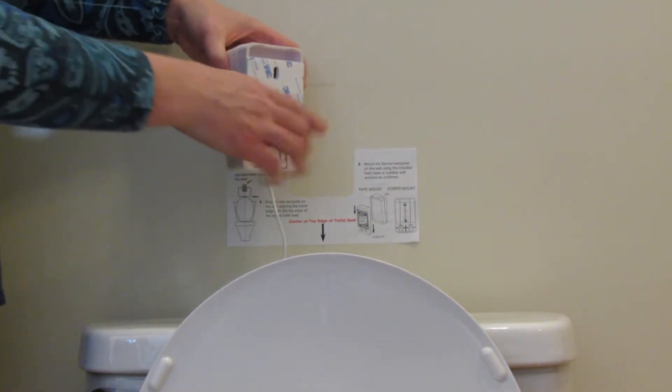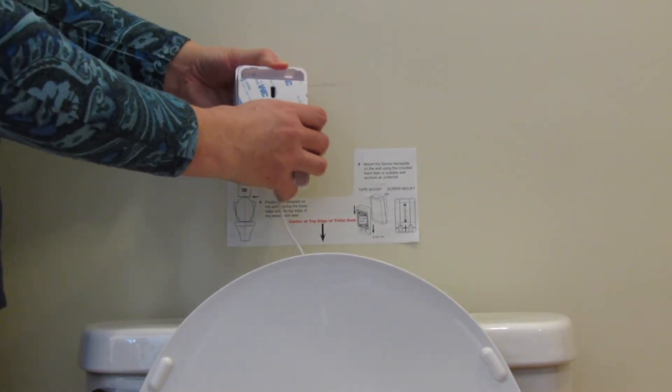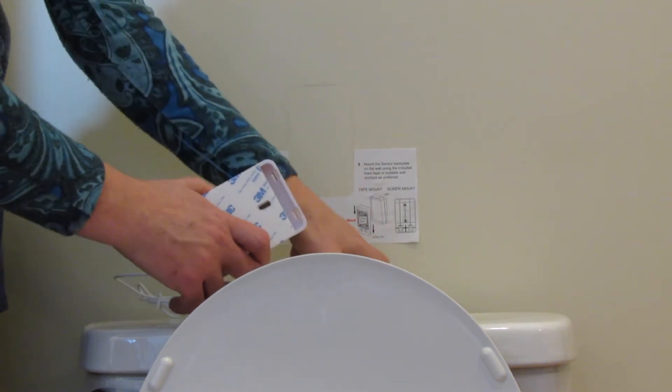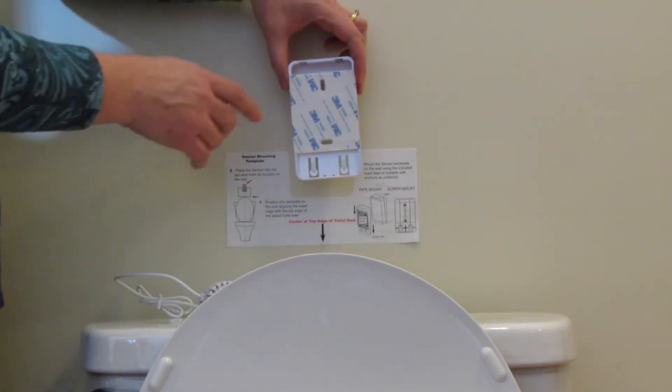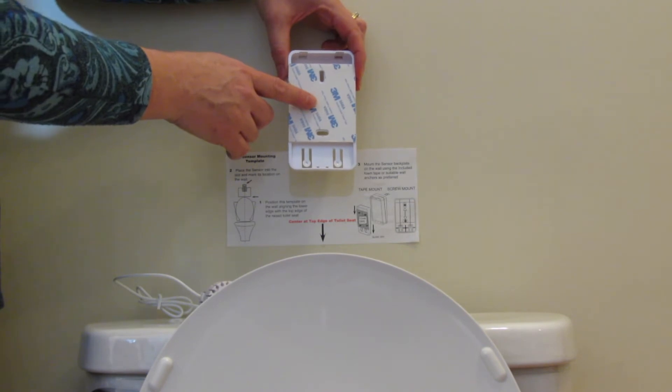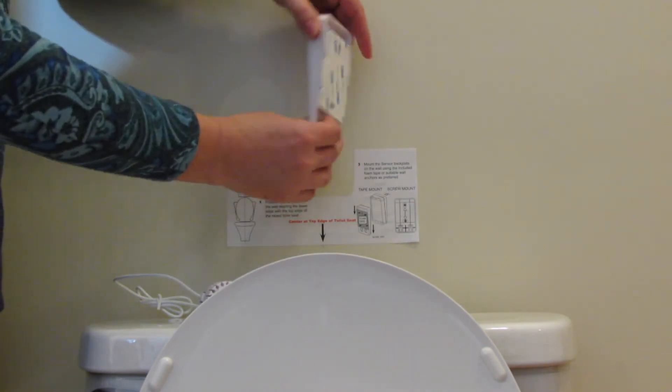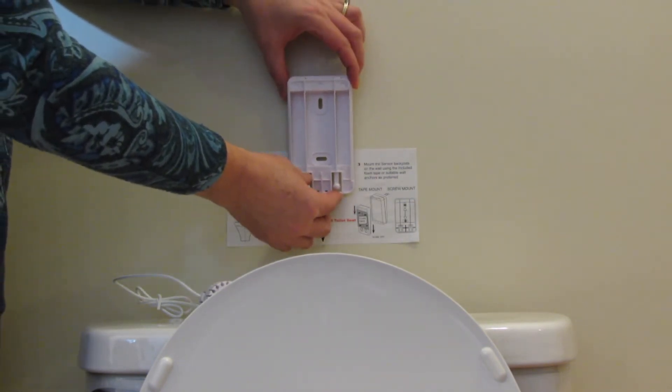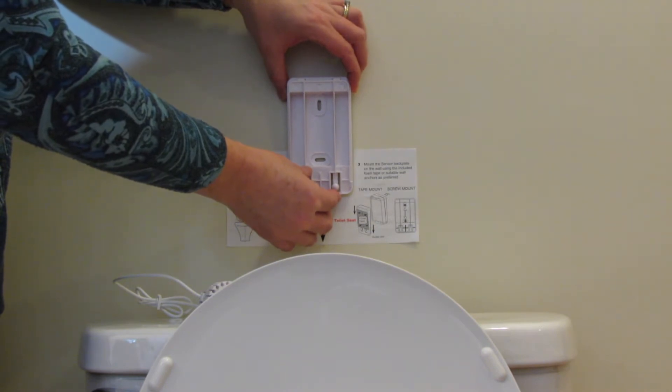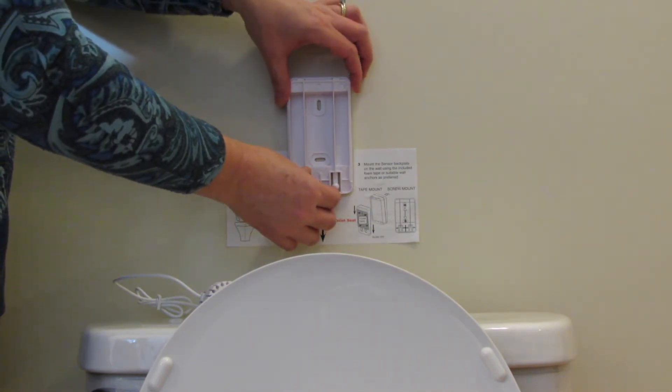Remove the back plate by sliding downward. If you are doing an adhesive tape mount, then peel the backing off, reposition, and press firmly to the wall to adhere.